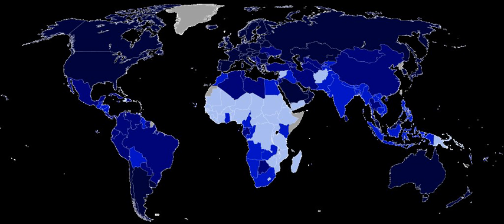The Human Development Index is a statistical composite index of life expectancy, education, and per capita income indicators, which are used to rank countries into four tiers of human development. A country scores a higher HDI when the lifespan is higher, the education level is higher, and the GDP per capita is higher.